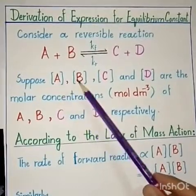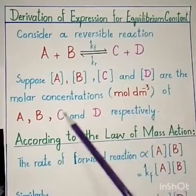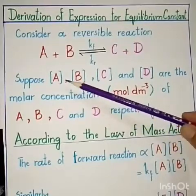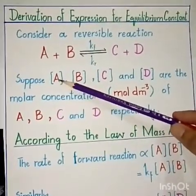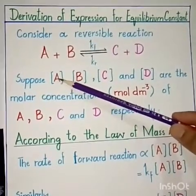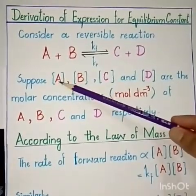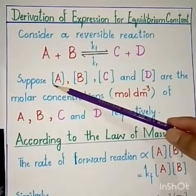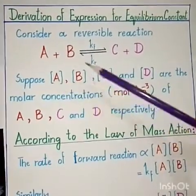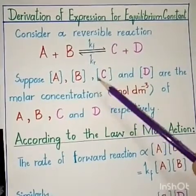If we suppose A, B, C, and D are written in square brackets, they represent the molar concentrations of A, B, C, and D respectively. The square brackets indicate molar concentration — for example, [A] means A has a certain number of moles (one mole, two moles, and so on). This square bracket notation represents the molar concentration or active mass, with units of moles per decimetre cubed.